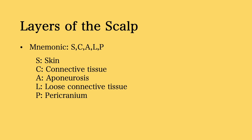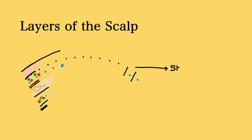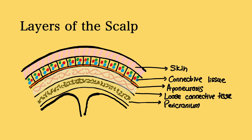The scalp has five layers. It's easy to remember these layers because the word scalp itself acts as a mnemonic. The S stands for skin, C stands for connective tissue, A stands for the aponeurosis, L stands for the loose connective tissue, and P stands for the pericranium. Let's look at each layer in more detail.